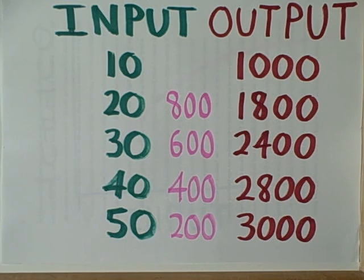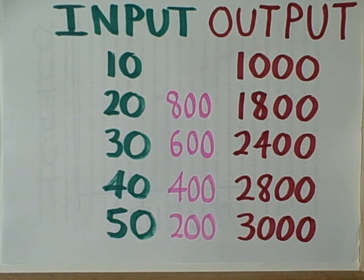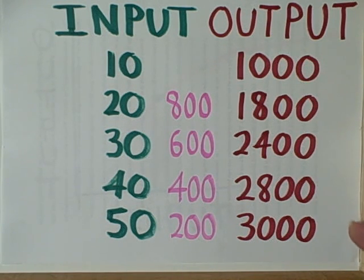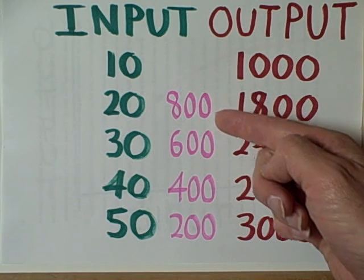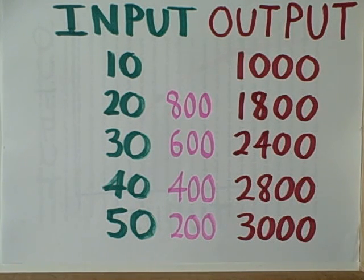We would see this trend continue as we went up to 40 or 50 hectares of land. His total output would increase, but by a diminishing amount marginally each time.